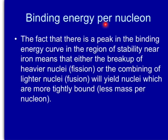Binding energy per nucleon continued. The fact that there is a peak in the binding energy curve in the region of stability near iron means that either the breakup of heavier nuclei, called fission, or the combining of lighter nuclei, called fusion, will yield nuclei which are more tightly bound, in other words less mass per nucleon.